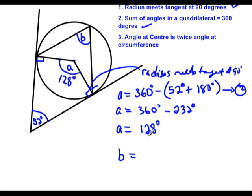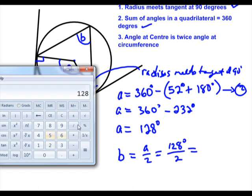So angle B is equal to angle A divided by 2. So angle A is 128 degrees divided by 2. And 2 into 128—let's divide the figure we have already by 2—64 degrees.